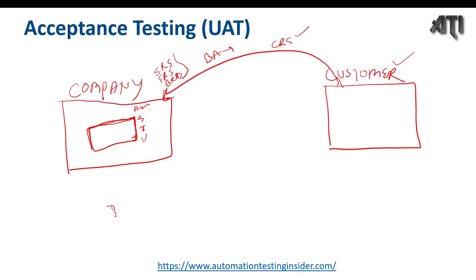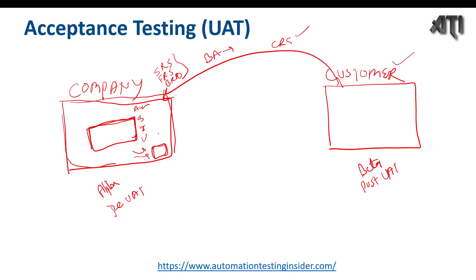Pre-UAT is also called alpha testing and is done at the development company's end. Post-UAT is called beta testing and is done at the customer's end. For pre-UAT, we create a test plan, scenarios, and test cases, and our testers and BAs perform this testing in our test environment. If everything passes, we release the software to the customer for beta testing; otherwise, defects are fixed first.